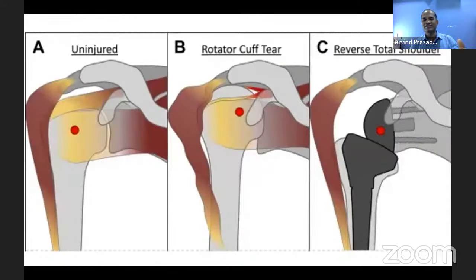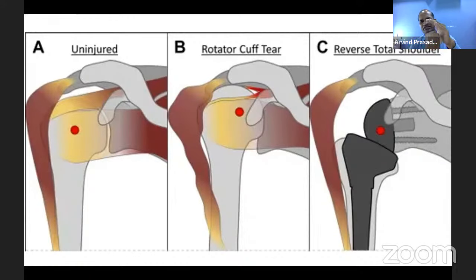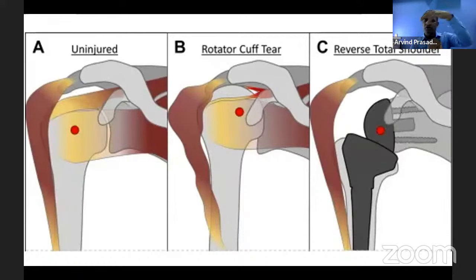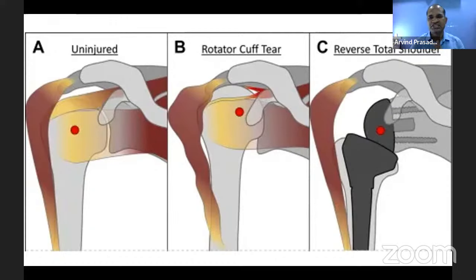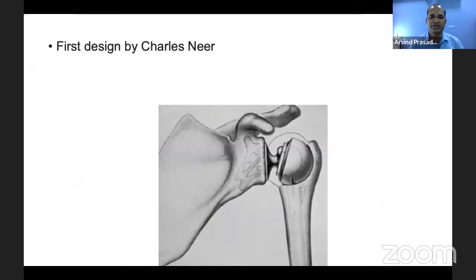As shown, in the normal shoulder the humeral head stays within the joint. In rotator cuff tear the humeral head migrates upward and the center of rotation shifts superiorly. In reverse shoulder arthroplasty the center of rotation is kept inferior and medial, so the deltoid muscle can act as an abductor. The medial joint position creates a stable construct. This is the principle of reverse shoulder arthroplasty, first designed by Charles Neer.